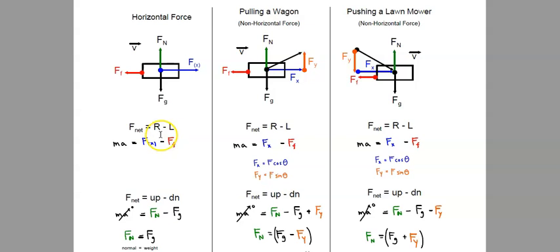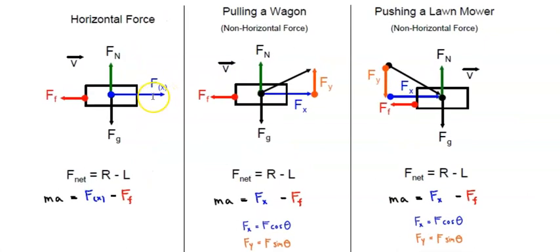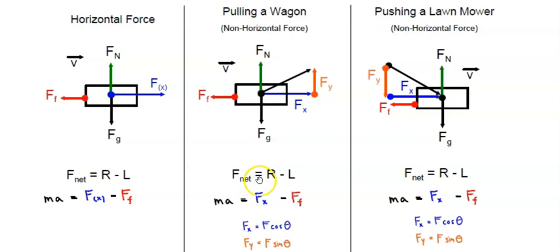For the F_net horizontal equations: in the first condition with a horizontal force, it's simply the blue force minus the red friction — right minus left equals MA. When pulling a wagon with a quadrant 1 vector, FX equals F cosine theta, so it's slightly smaller than the full force. F_net still equals FX minus friction, which is F cosine theta minus friction. When pushing a lawnmower, FX still points right, but now there's also a downward FY component.